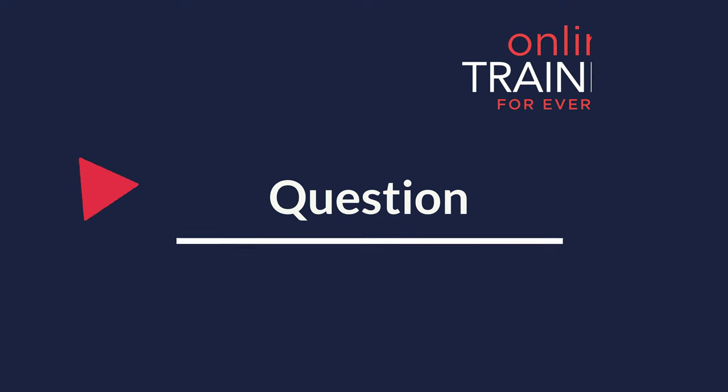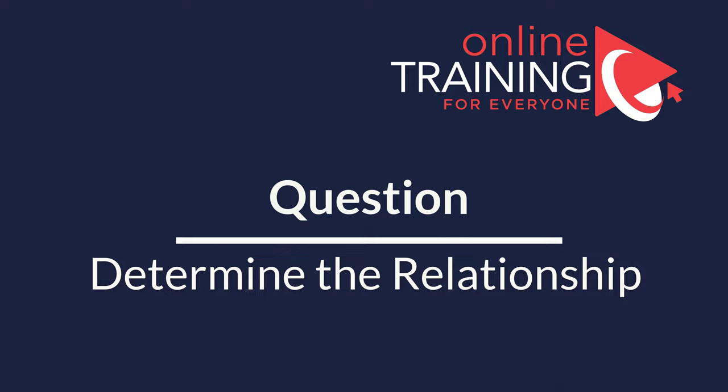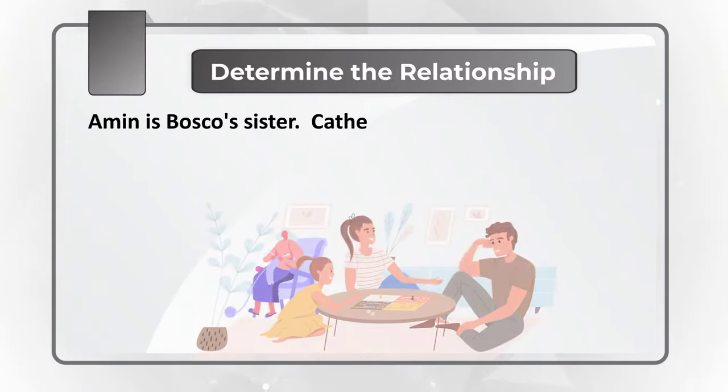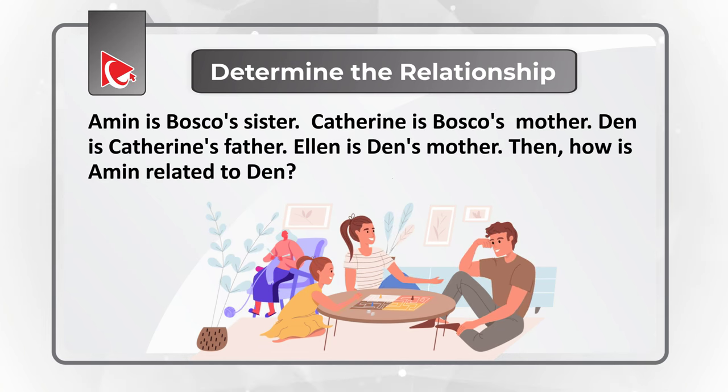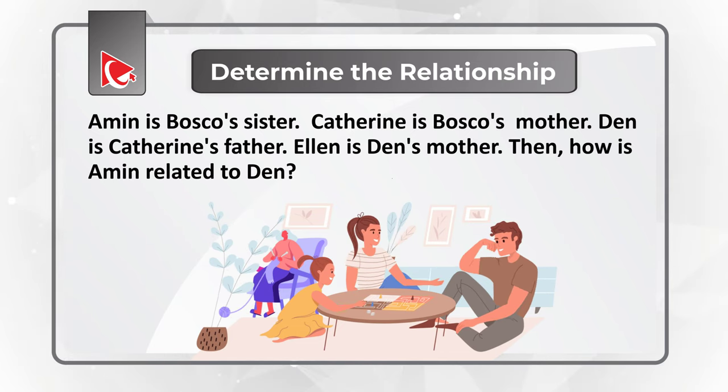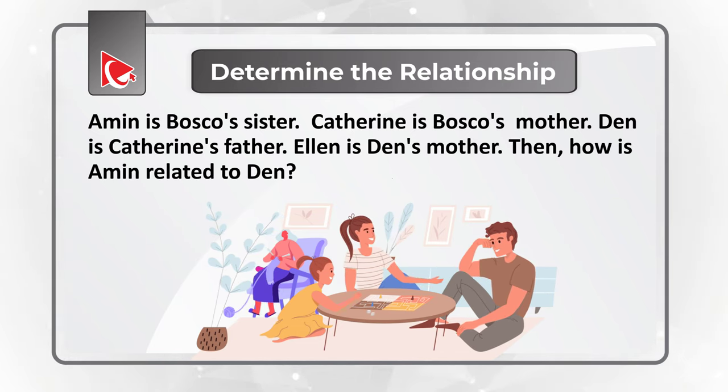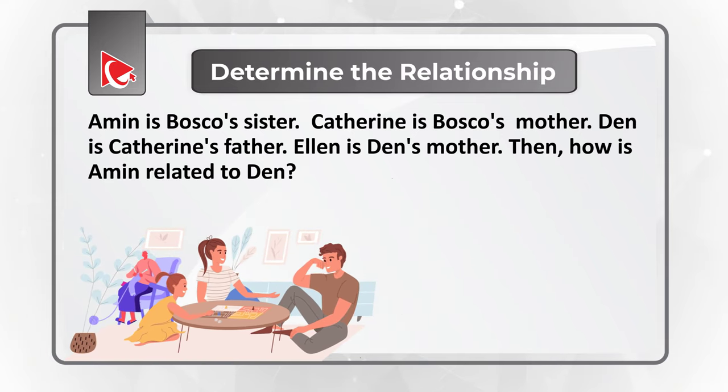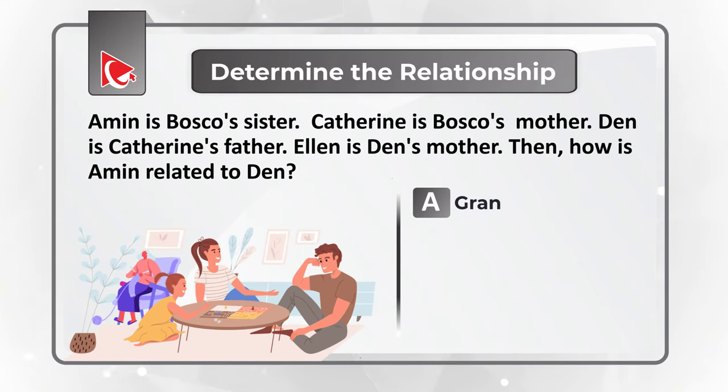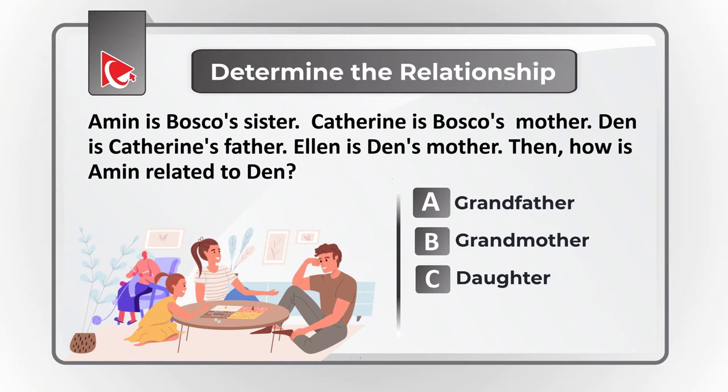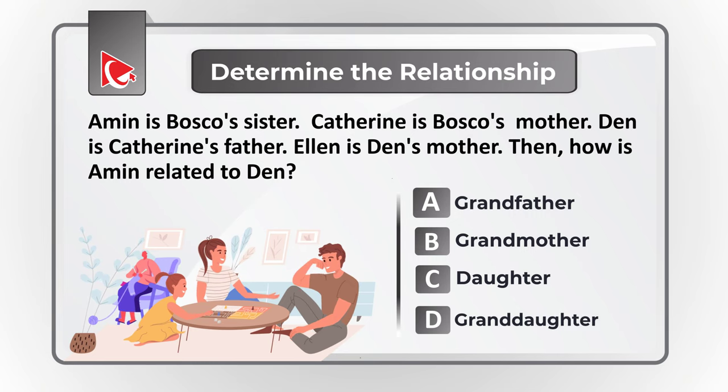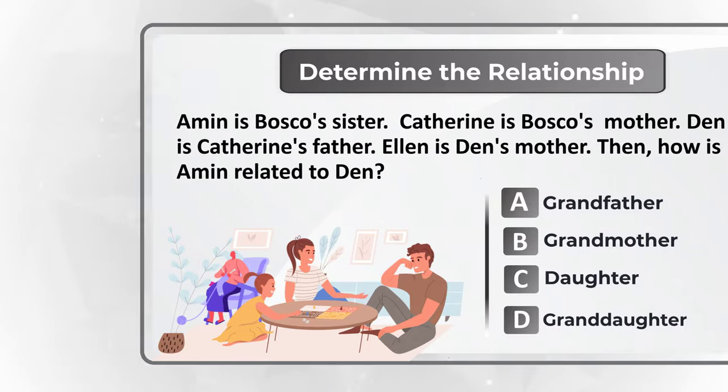Here is an interesting challenge where you need to determine the relationship between family members. Amin is Baska's sister. Catherine is Baska's mother. Dan is Catherine's father. And Alan is Dan's mother. You need to determine how Amin is related to Dan. And you have 4 different choices. Choice A, Grandfather. Choice B, Grandmother. Choice C, Daughter. And choice D, Granddaughter. Give yourself a little bit of time to see if you can navigate in this puzzle and get to the correct solution.